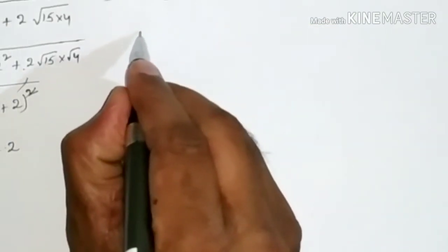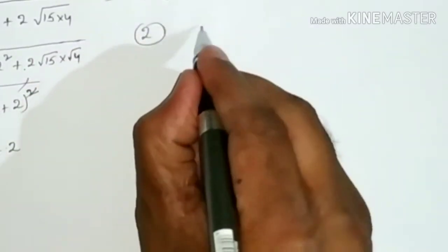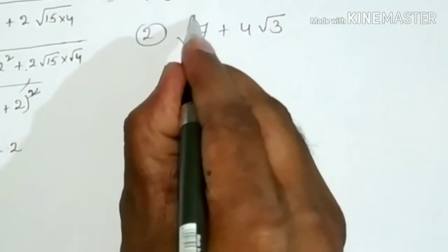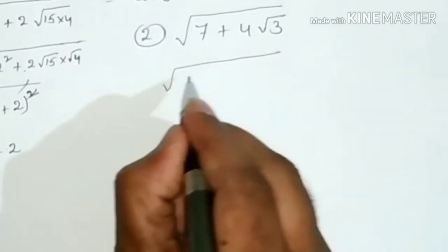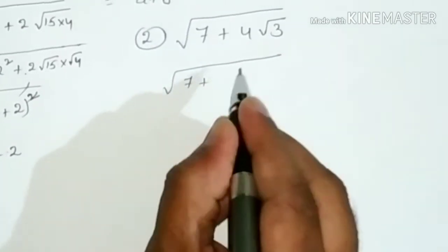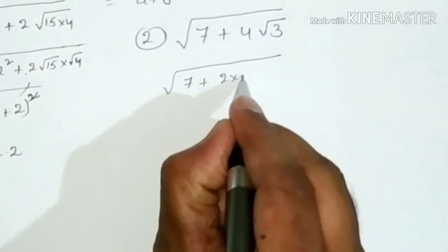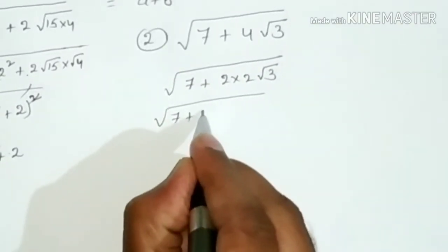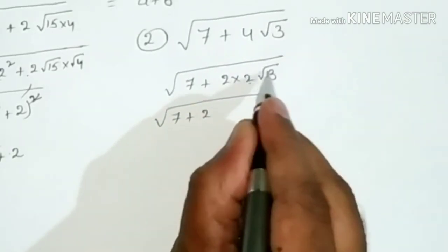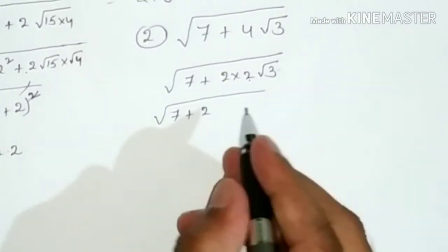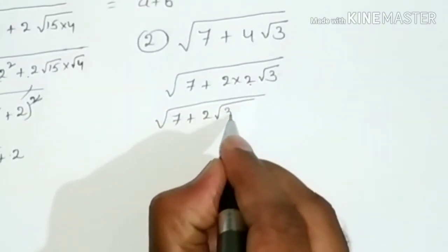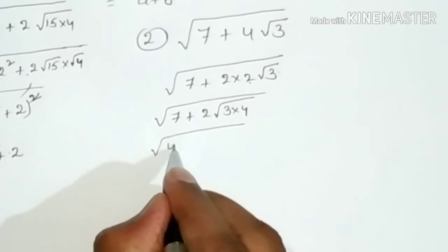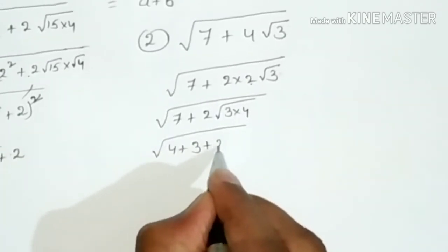Similarly, the second question is the square root of 7 + 4√3. Here I am writing 7, and 4√3 means 2ab where 2 is taken outside. Taking 2 inside the root becomes 2², and we write 7 as the sum of two numbers.